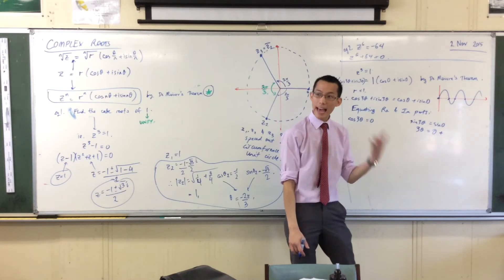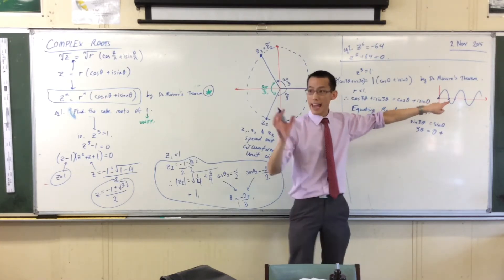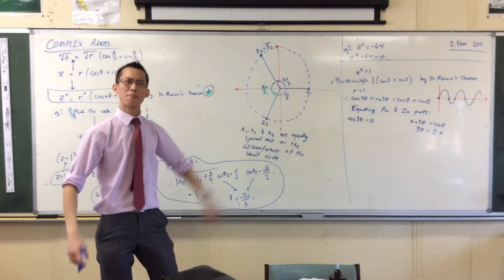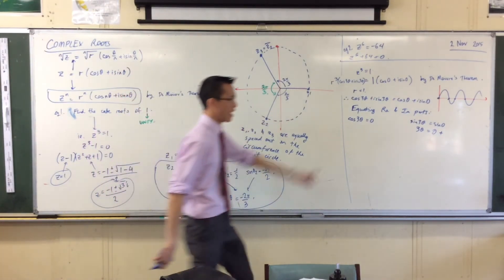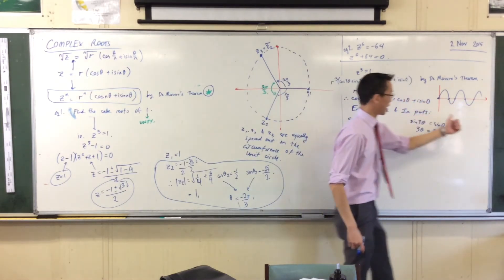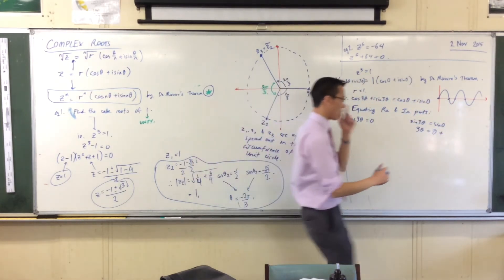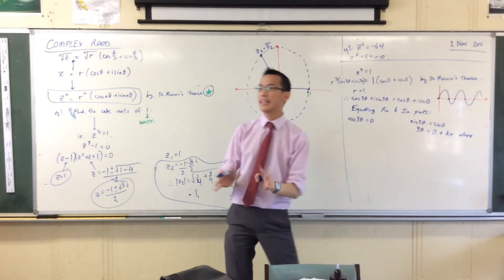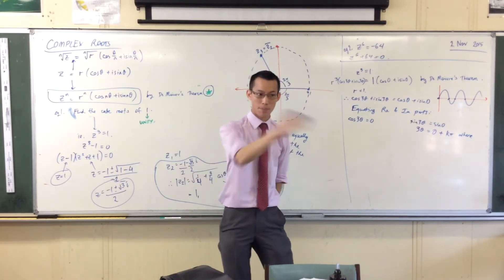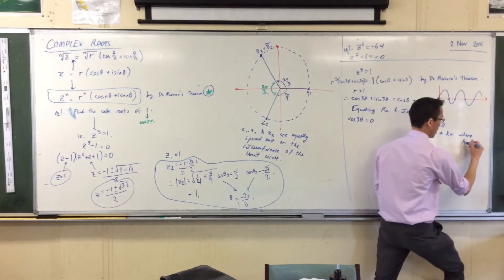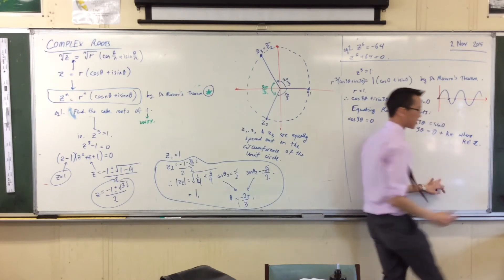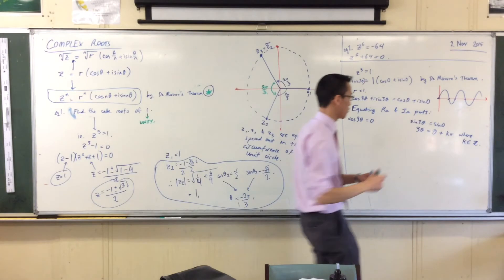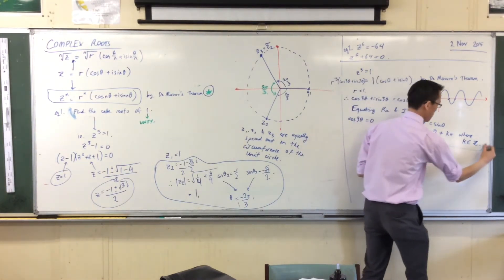This is not the only solution. What I can do is add any whole number multiple of π. So I'm going to say 3θ = 0 plus k·π, where k can be any integer I want. That'll capture the positive and the negative.